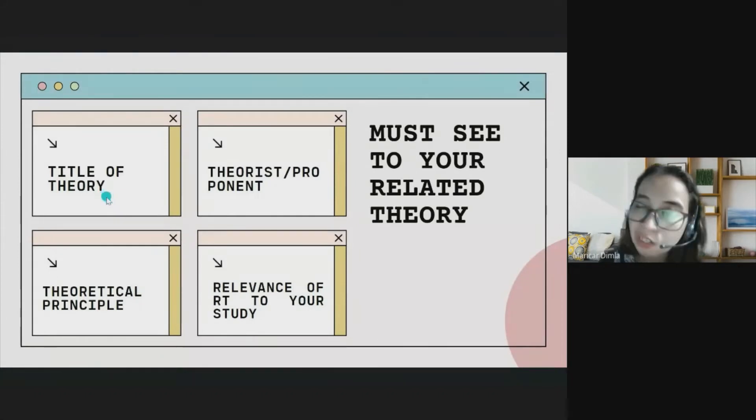What are the things that we need to include in writing the related theory? First one class, the title of the theory. Followed by the theorist or the proponent. It's like related literature and studies. If there's no author, be worried. It might be less legit, illegitimate and not reliable. Same goes with related theories. You'll encounter many theories online but without proponents or theorists who imposed them. You need to filter out and select the best one.